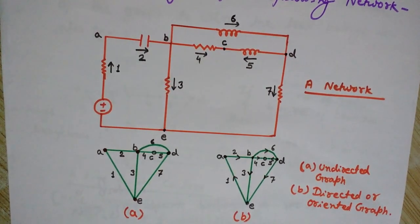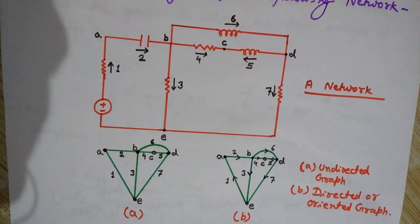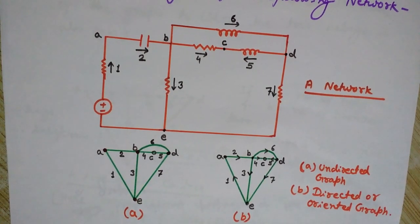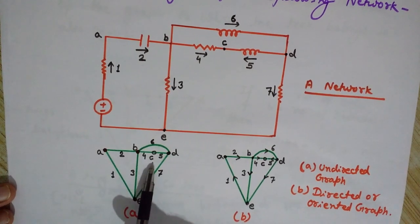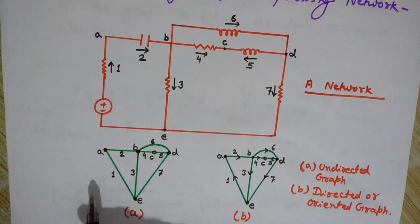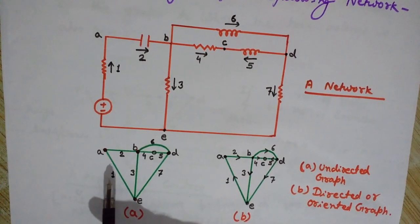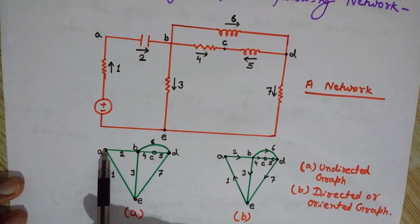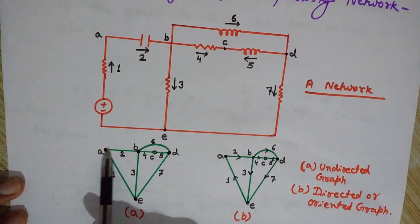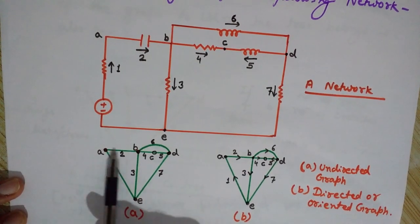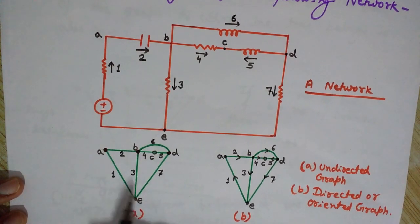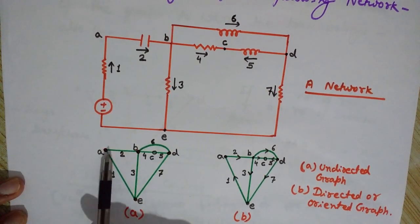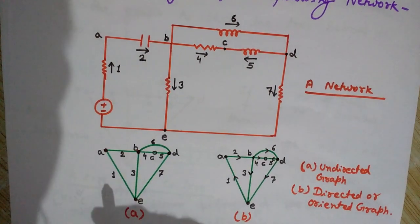A tree is a connected graph having no closed path. A connected graph means there exists at least one path between every pair of nodes. In our example, we can reach from node A to node E through multiple paths — a direct path, or through nodes 2 to 3, or through paths 2, 6, 7.